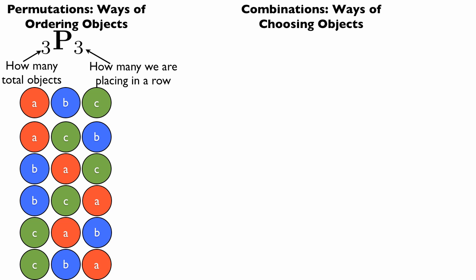So 3P3 means there are three different objects, how many ways can we order them? By counting here: abc, acb, bac, bca, cab, and cba, we find that 3P3 equals 6. In the last video we also gave a formula for this, so I encourage you to look back if you're still fuzzy.